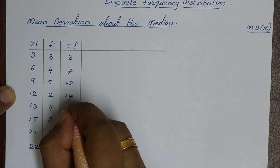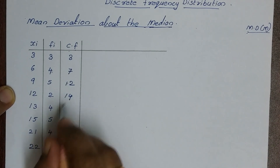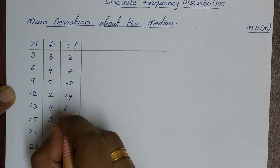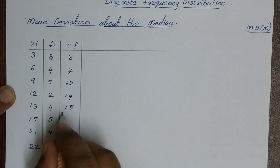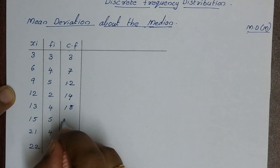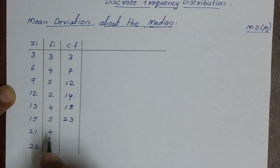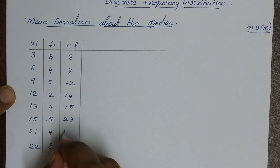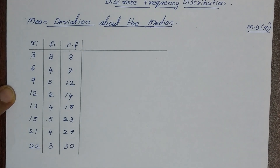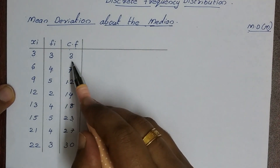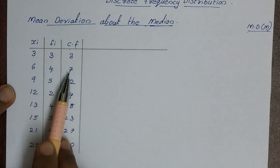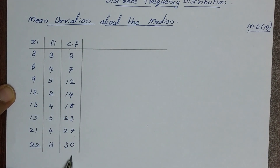Then 12 plus 2 is 14, 14 plus 4 is 18, then 18 plus 5 is 23, 23 plus 4 is 27, 27 plus 3 is 30. That is the cumulative frequency. We have to add the frequencies.